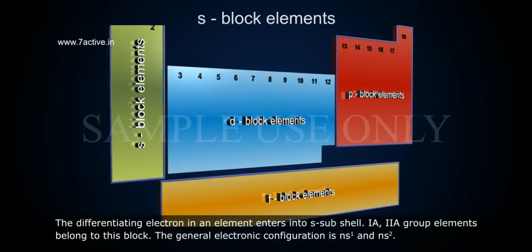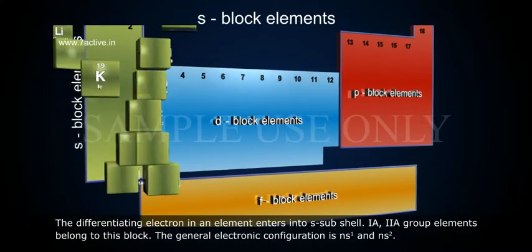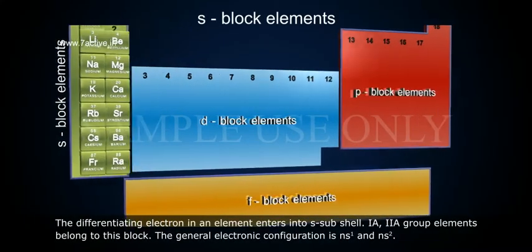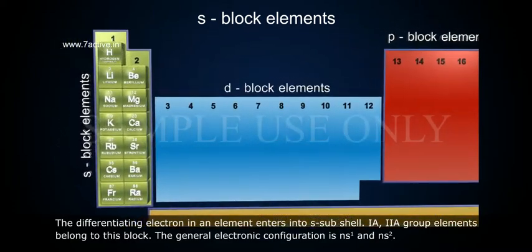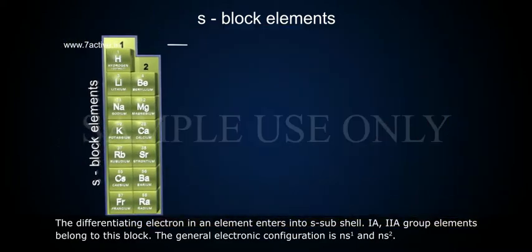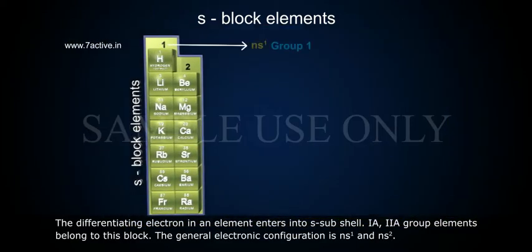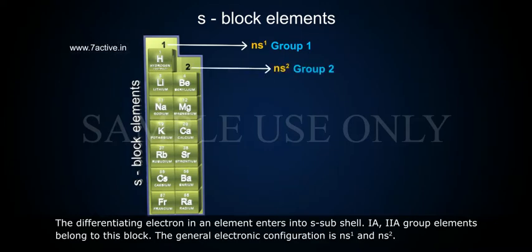S block elements. The differentiating electron in an element enters into the S subshell. Group 1A and 2A elements belong to this block. The general electronic configuration is ns1 and ns2.